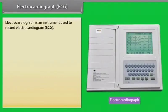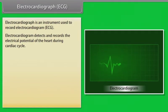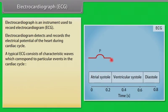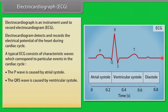Electrocardiograph (ECG) is an instrument used to record the electrocardiogram. The electrocardiogram detects and records the electrical potential of the heart during the cardiac cycle. A typical ECG consists of characteristic waves which correspond to particular events in the cardiac cycle. The P wave is caused by atrial systole, the QRS wave is caused by ventricular systole, and the T wave coincides with ventricular diastole. The heart rate can be calculated from the interval between one P wave and the next.